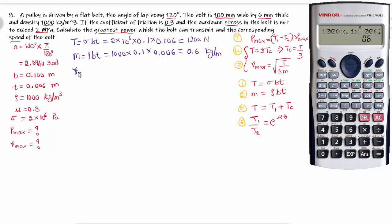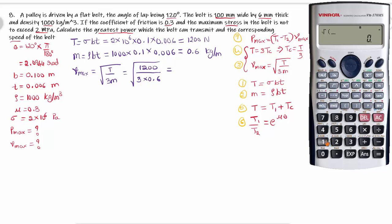Step 3: Vmax is equal to the square root of T divided by 3m. Substituting T equals 1200 newtons and m equals 0.6, we get the square root of 1200 divided by (3 into 0.6). We obtain the velocity as 25.82 meters per second.